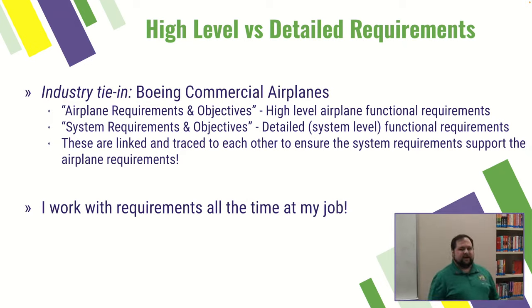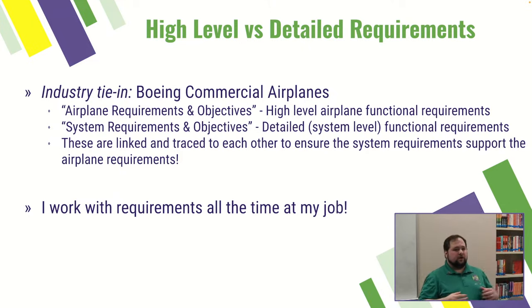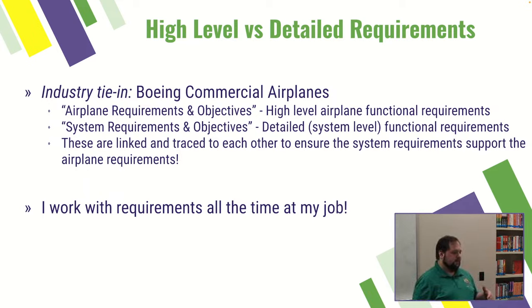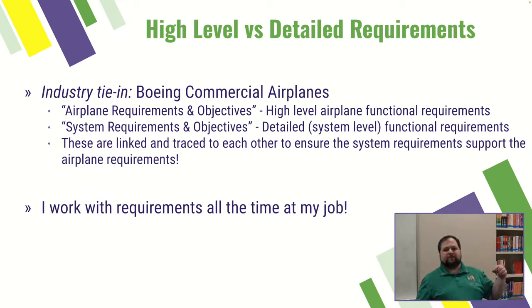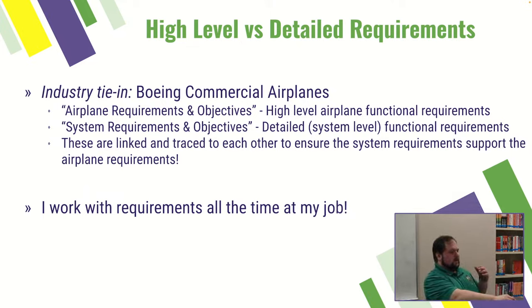Tying back to industry: at Boeing commercial airplanes, we have airplane-level requirements and objectives — high-level functional requirements — that get allocated out to each subsystem. Those are developed as detailed or system-level functional requirements, and we link and trace them to each other so airplane-level requirements have at least one system-level requirement linked to them. We work with requirements all the time at my job. In FRC we're a little less formal, but it's still the same process and the same objective within the engineering design process.